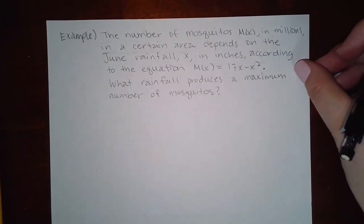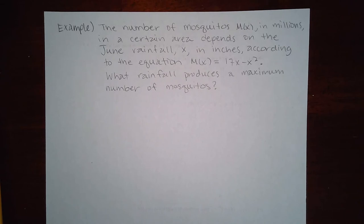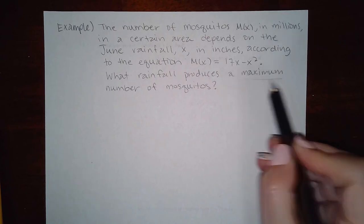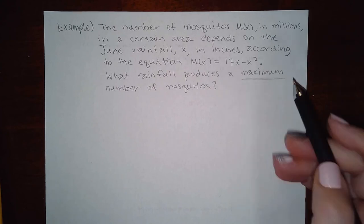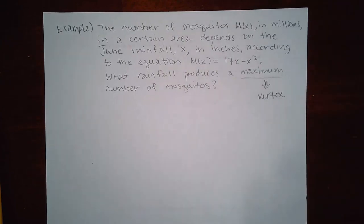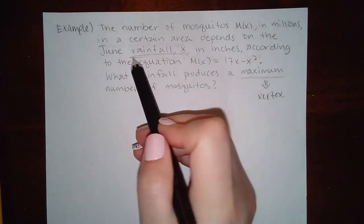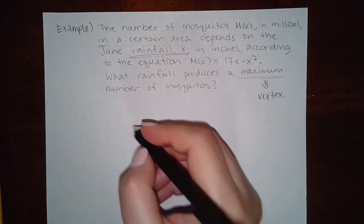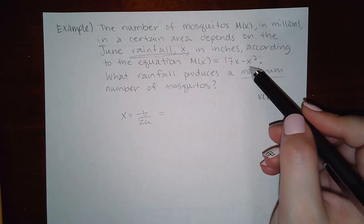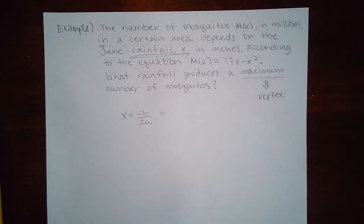The last one says the number of mosquitoes M(x), in millions, in a certain area depends on the June rainfall in inches. According to the equation, what rainfall produces a maximum number of mosquitoes? There's that word again. If they use the word minimum, it's the same thing. Both of those should remind you of vertex. So what rainfall produces the maximum number of mosquitoes? Now remember, rainfall is the x, so I'm only needing to find the x value of the vertex.